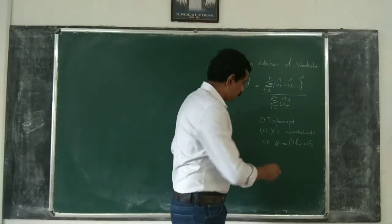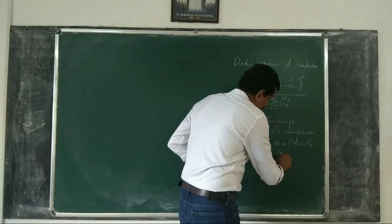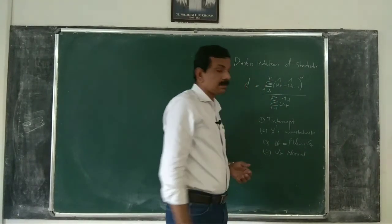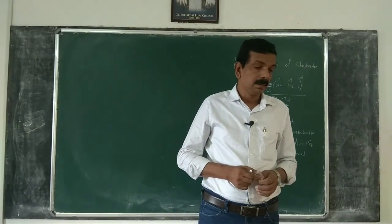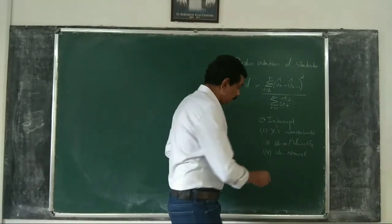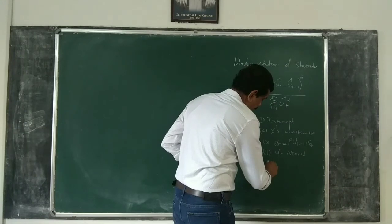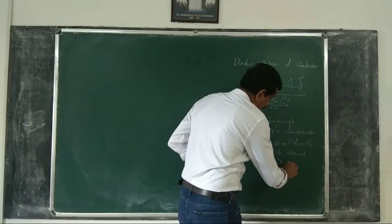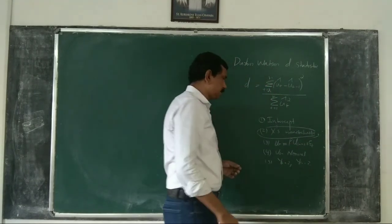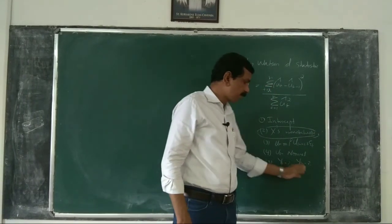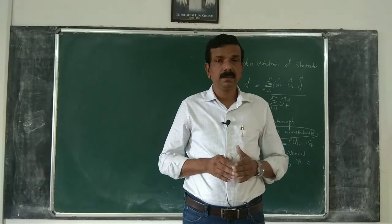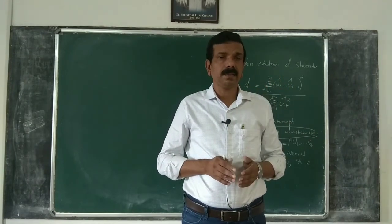The fourth assumption is that u_t is assumed to be normally distributed. The fifth assumption is that the model should not include lagged values of the dependent variable, like y_{t-1} or y_{t-2}, etc., as independent variables along with other explanatory variables.